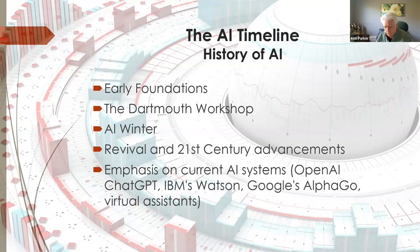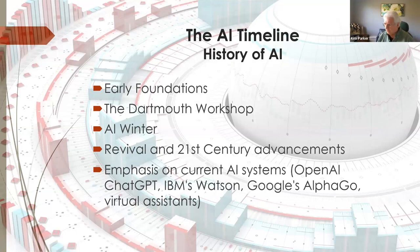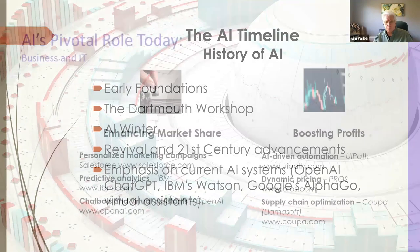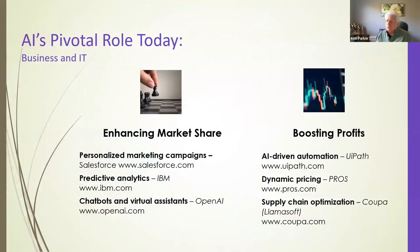Google's AlphaGo in 2016 was the time when AI enthusiasts pointed to and said, 'This is truly when machines are better' — because it beat the world's top Go player. It really needs to be looked at as a milestone in AI, and we're going to delve into the different roles that it plays because it has really enhanced market share.